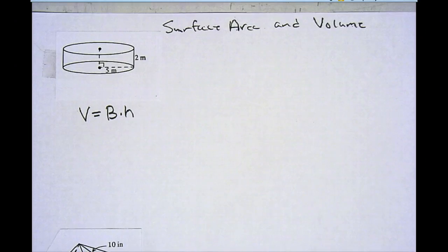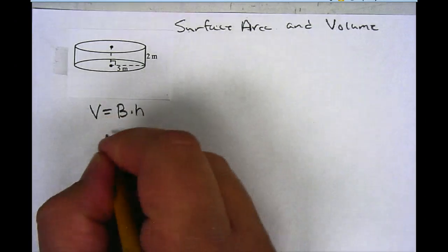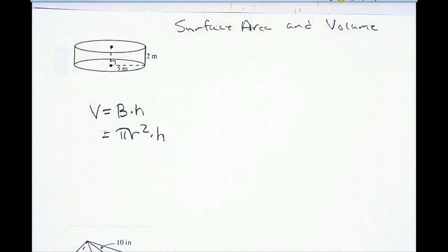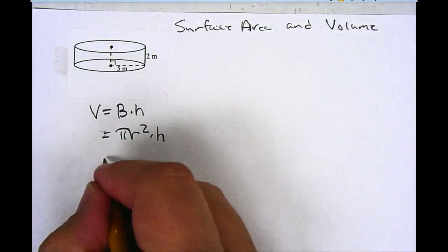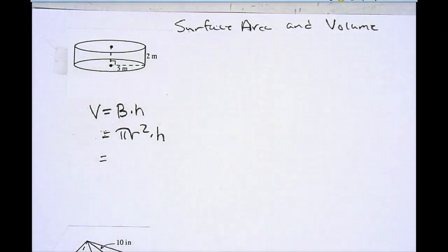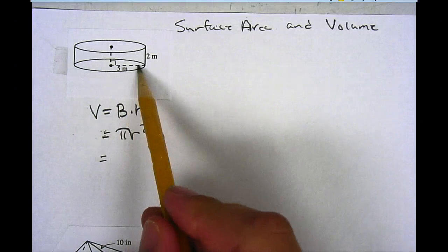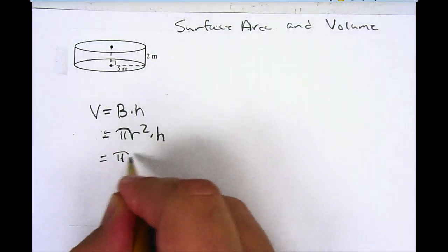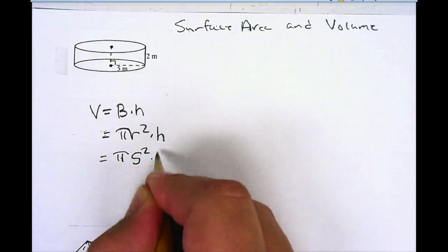On a cylinder, like the one in the picture I have here, the base is a circle. So the formula is going to be pi times radius squared times the height. After I write the formula down, what I need to do is substitute the radius and the height in for R and H. In this particular problem, my radius is 5 and my height is 2.